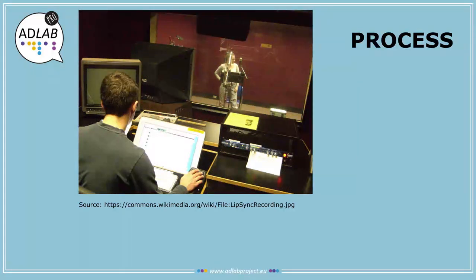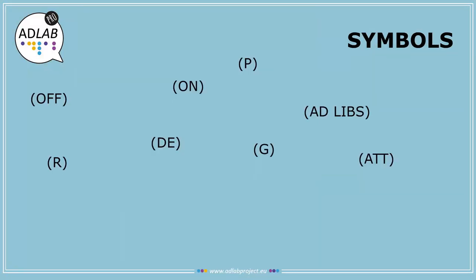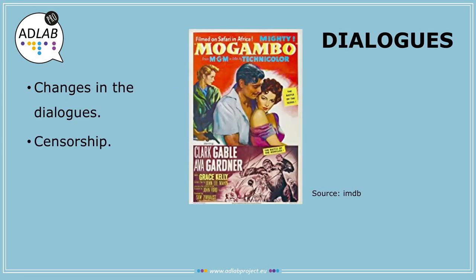There are other commercial, technical and artistic steps in the process that I will not explain. In order to guarantee that the recording runs smoothly, the expert in charge of synchronization, the dialogue writer, uses symbols. Due to synchronization constraints, it may well be that dialogues are slightly changed. This is standard practice and should not be viewed as an instance of censorship, although it is true that dubbing has been used as a tool to censor dialogues by some regimes. Go check what happened with the translation of Mogambo in Spain — you will be surprised.